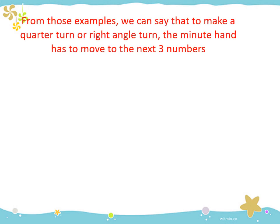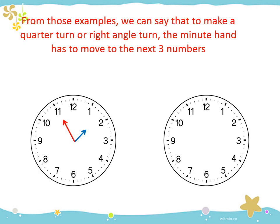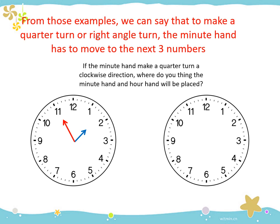From those examples, we can say that to make a quarter turn or right angle turn, the minute hand has to move to the next 3 numbers. Let's try: the first clock shows 5 minutes to 2. If the minute hand makes a quarter turn in the clockwise direction, where will the minute hand and hour hand be placed? The minute hand will point to 2 — from 11, go to the next 3 numbers, it will point to 2. The clock will show 10 minutes past 2.